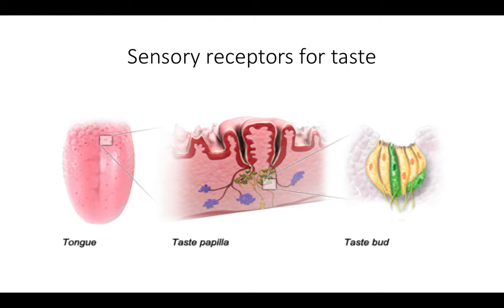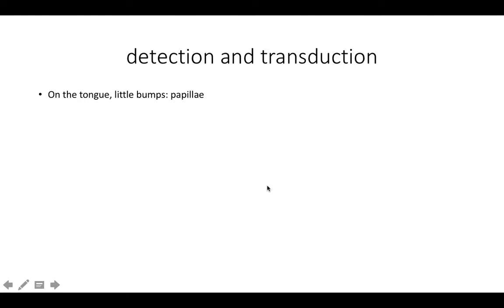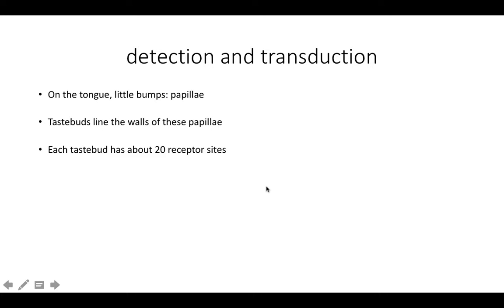Structurally, you go to the tongue, although we have taste buds throughout our mouth. On the tongue are papillae, which are the bumps on your tongue. Deep down in those are taste buds. Taste buds line the walls of the papillae and are found all over the tongue, the roof of the mouth, the cheeks, even under the tongue. The little bumps — papillae — have taste buds lining the walls.